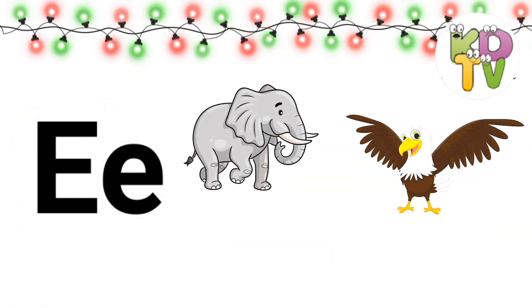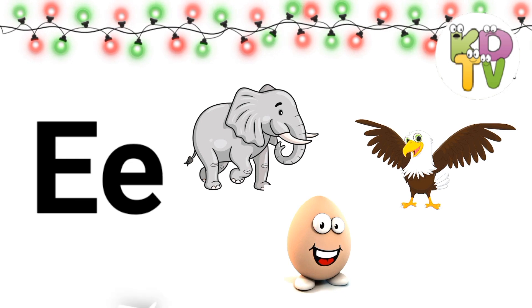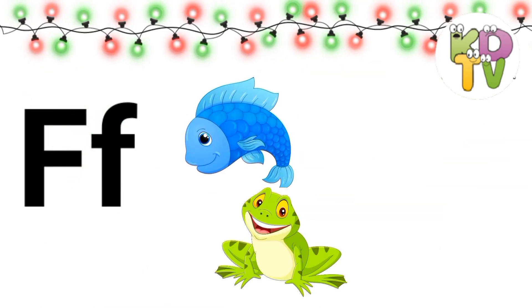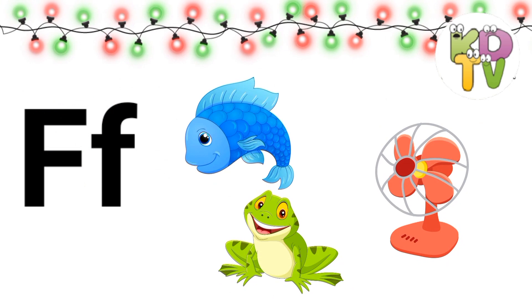E is for Elephant, Eagle. F is for Fish, Frog, Butterfly.